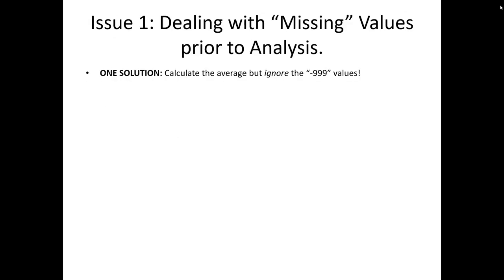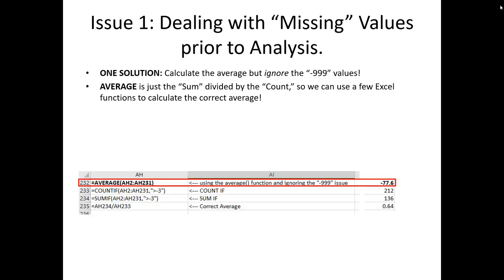One solution is that we simply calculate the average, but we ignore the negative 999 values. We can do this in a multi-step process. We know that the average is just the sum of all the values that we're interested in taking the average of divided by the count of all those values. So we can use a few Excel functions to calculate the correct average for us while ignoring negative 999 values. We're going to illustrate this in Excel in a moment here, but let's look at how this is going to work. The functions are shown below here.